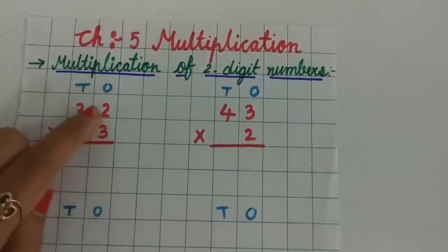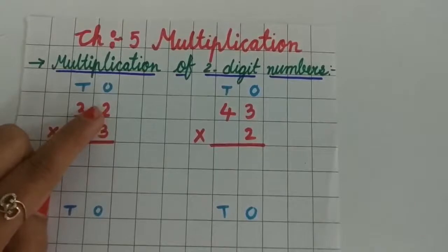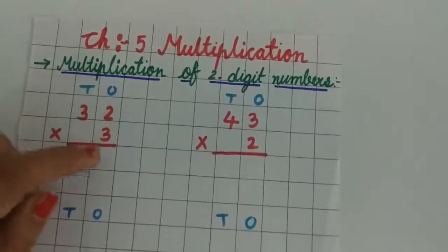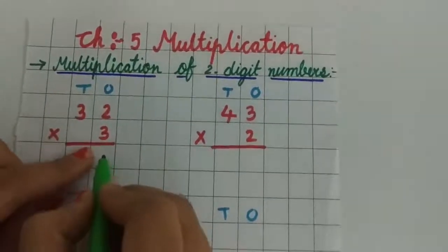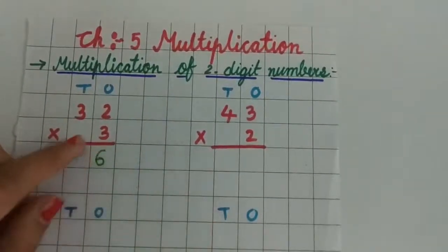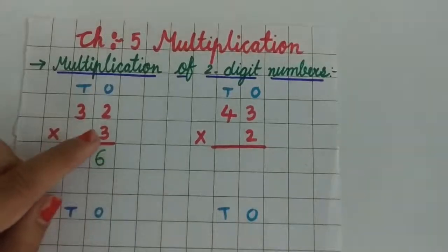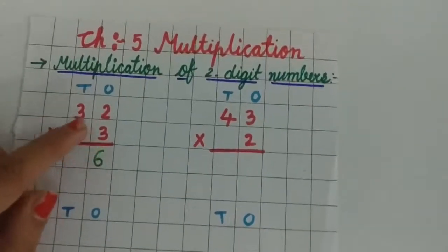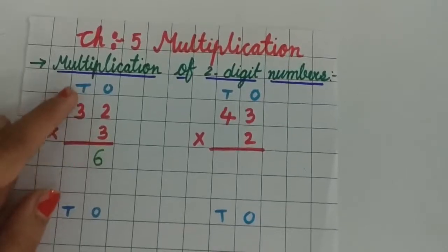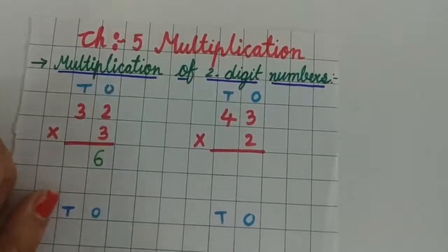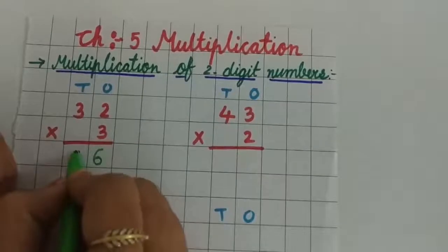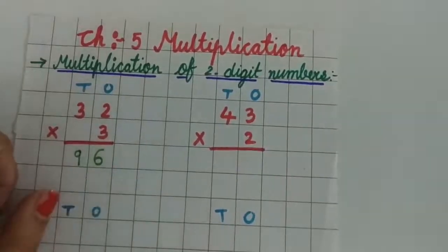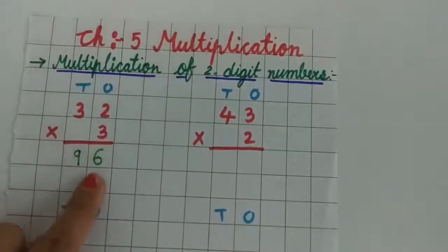3 multiply by 2. 3 twos are 6. So write 6 below the 1's column. Now, 3 multiply by 3 means 3 threes are 9. Write 9 below the 10's column. So our answer is 96.